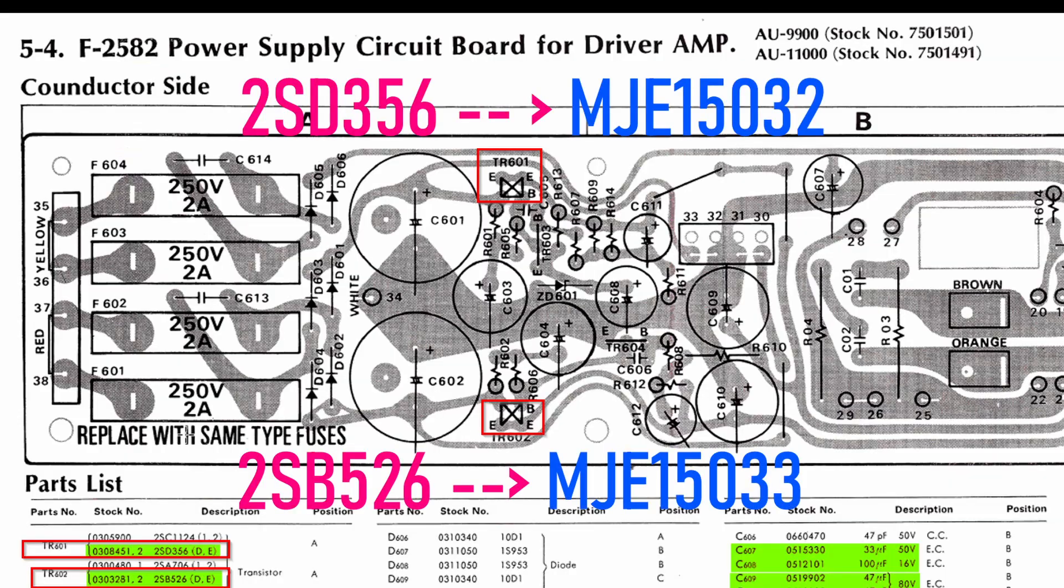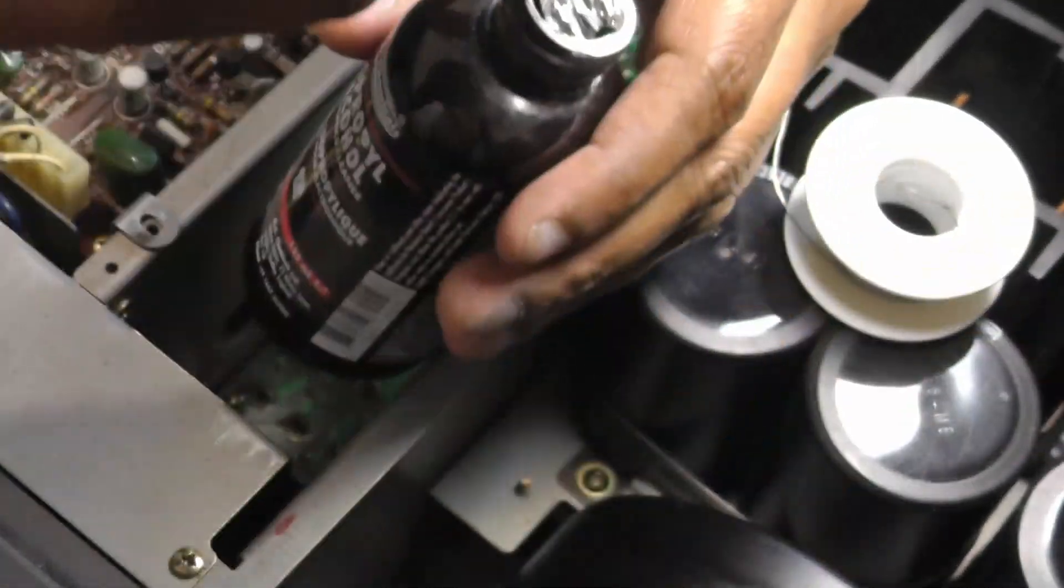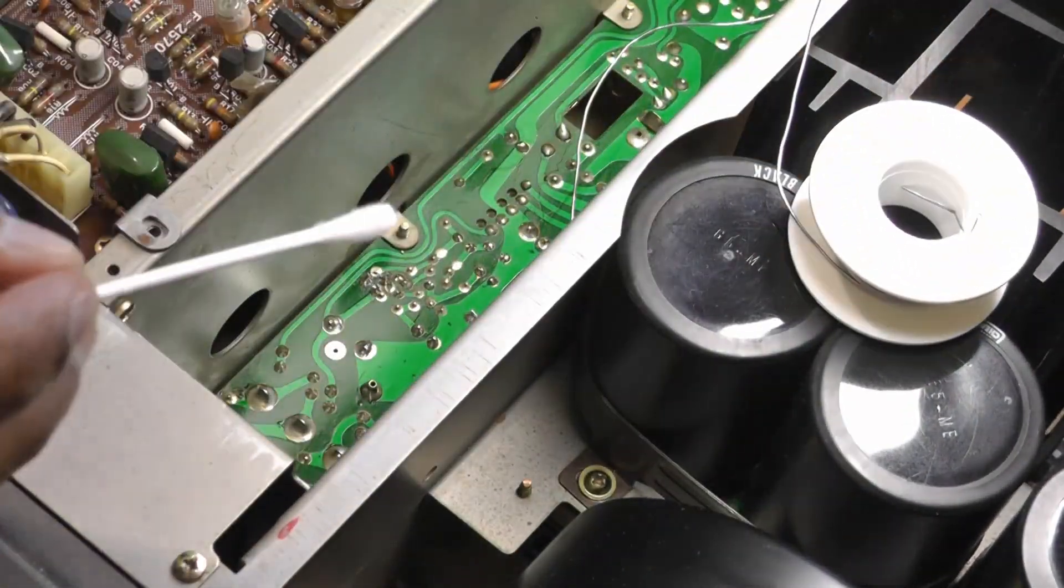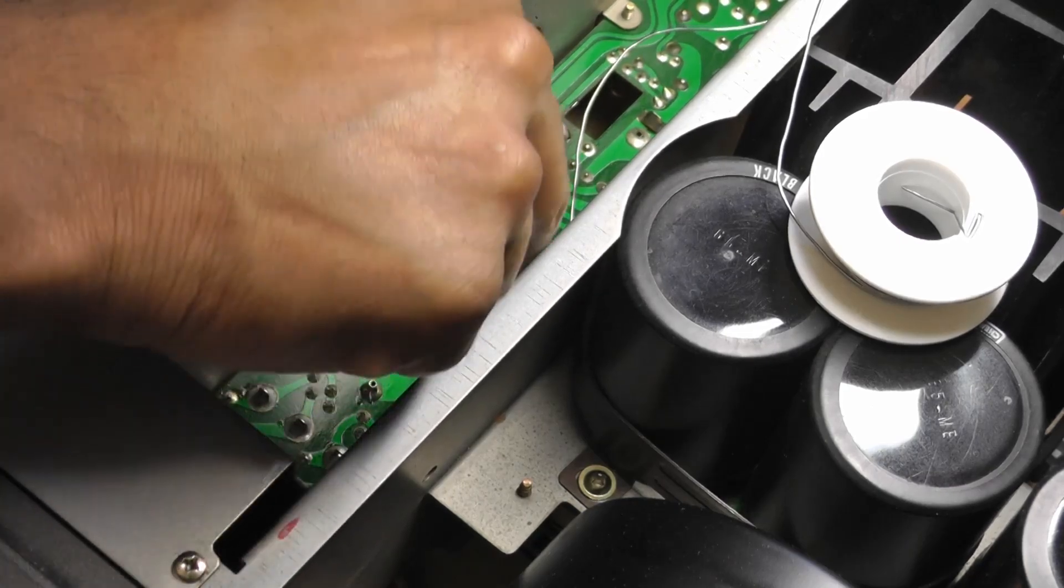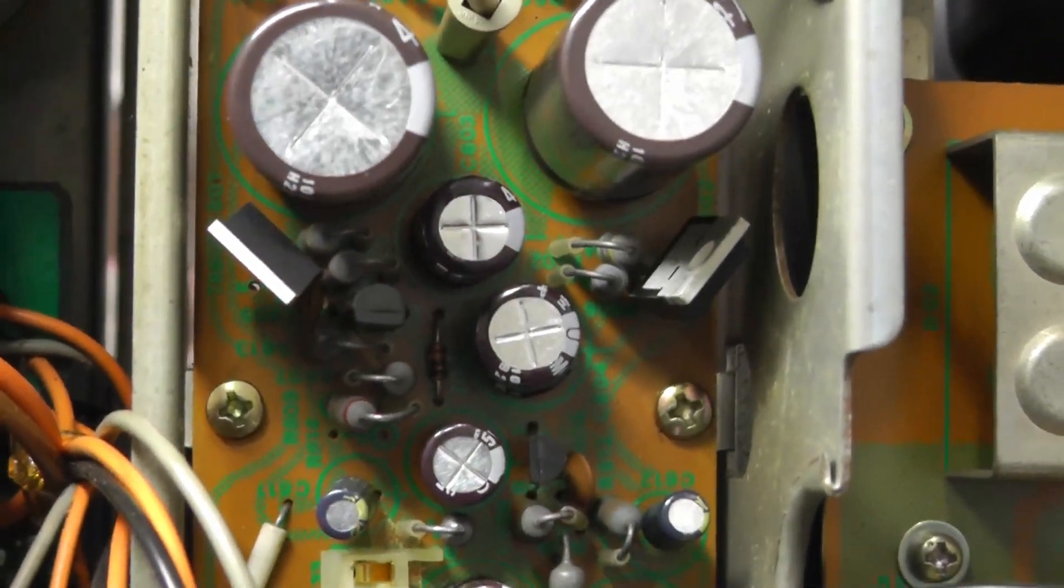So same mantra as the regulator power supply board, we use the same power transistors replace old ones. So yeah MJE15033 and MJE15032. And again same pin order so just install them as the original ones.